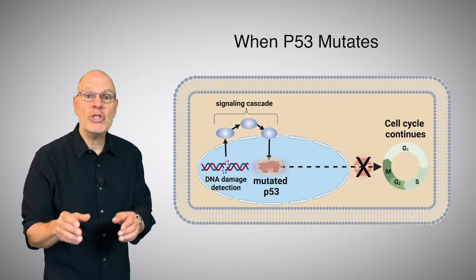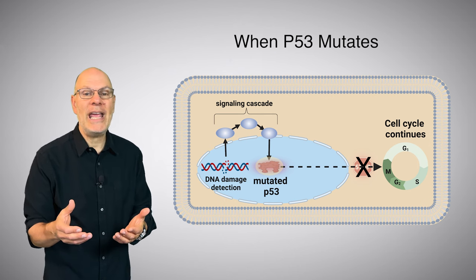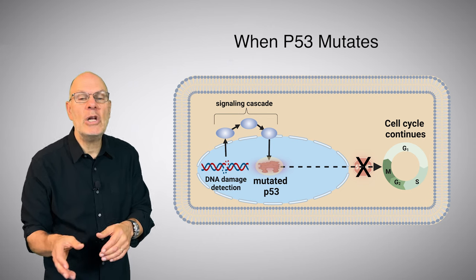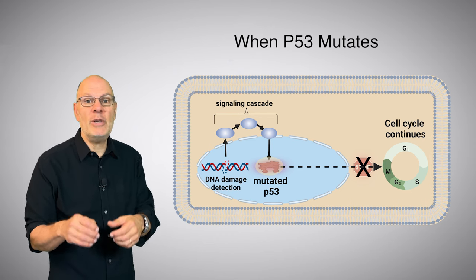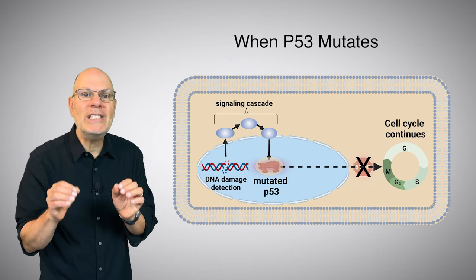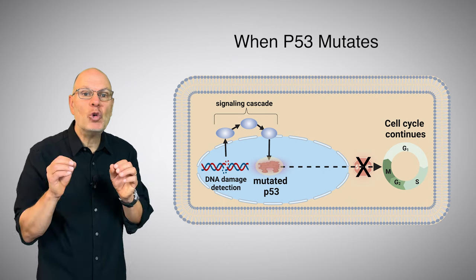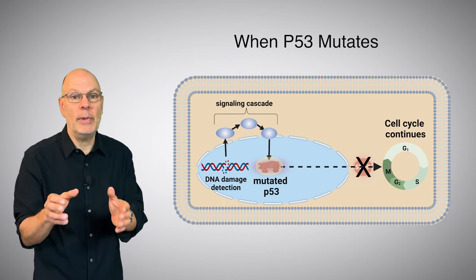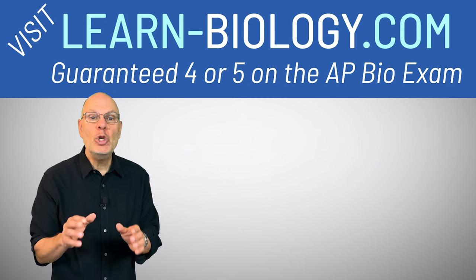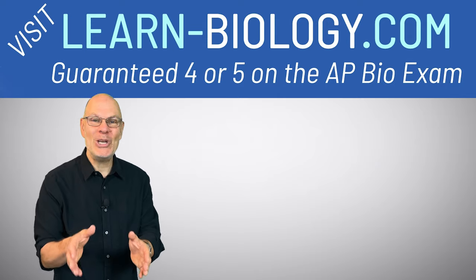But if a mutation occurs in the P53 gene, the cell loses these protective anti-cancer mechanisms. That's because a mutation in the P53 gene causes the P53 protein to be defective or missing. As a result, the cell will continue to move through the cell cycle with broken or damaged DNA, increasing the chance that the cell will become cancerous. Cancer is all about unregulated cell division. You can learn all about normal cell division by watching the music video, Mitosis.